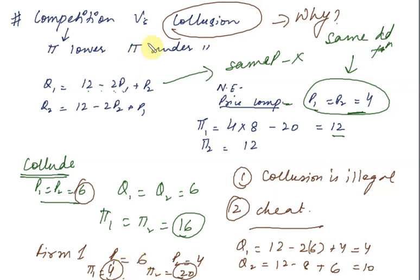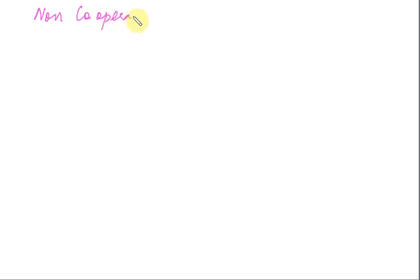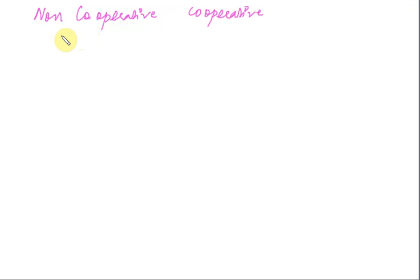So firm 2, which cheated, earned a higher profit. This is why, although collusion gives higher profit, firms often end up not colluding. Looking at this, we have two types of games: cooperative game and non-cooperative game. A cooperative game is collusion — when you collude. A non-cooperative game is when each firm independently decides what is best for it. For this, we use a payoff matrix.